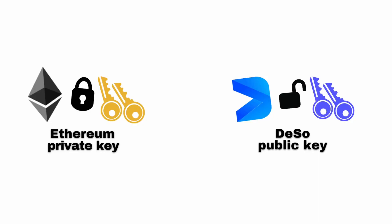DeSo is a layer 1 blockchain separate from Ethereum, meaning that MetaMask does not natively integrate with DeSo. However, Ethereum does use the same cryptographic structures as DeSo to handle user wallets, so a private key on Ethereum corresponds to the exact same public key on both blockchains. This allows for translating a MetaMask wallet into a DeSo wallet fairly easily.